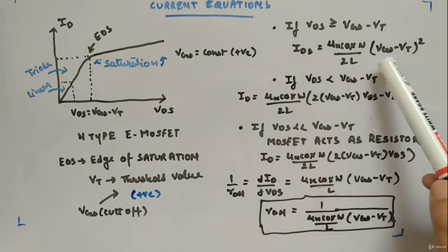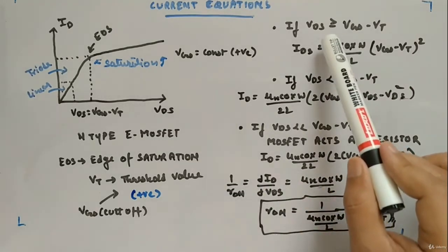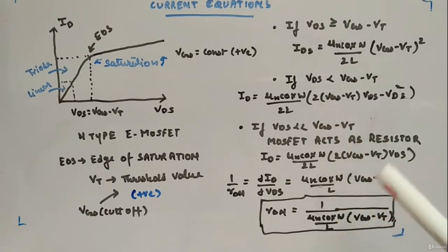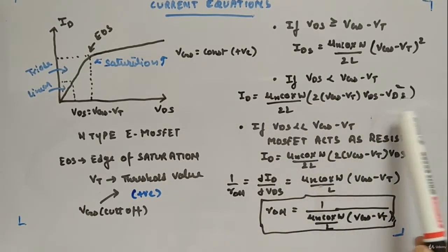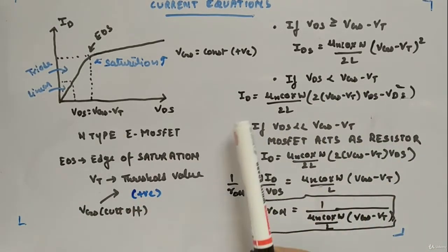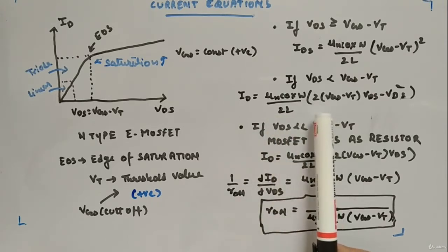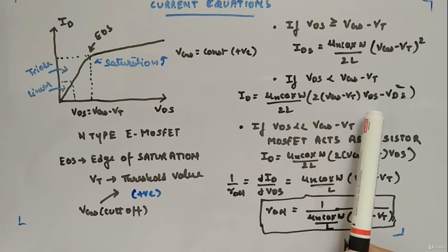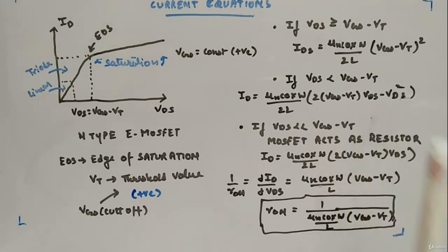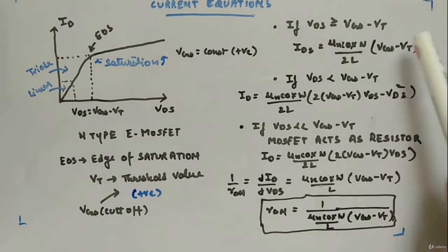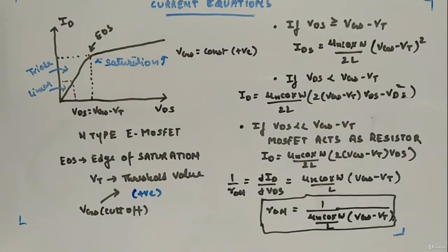When Vds is less than Vgs minus Vt, the MOSFET is in the triode region and follows this current equation: Id = μn·Cox·(W/2L)·[2(Vgs − Vt)·Vds − Vds²]. Notice that Vds appears in this equation, unlike the saturation equation where it does not — this is a very important distinction.